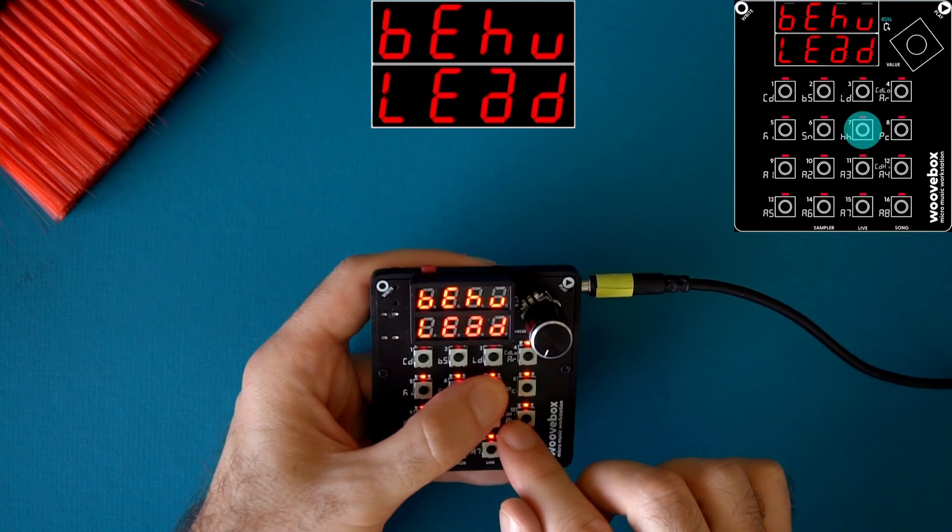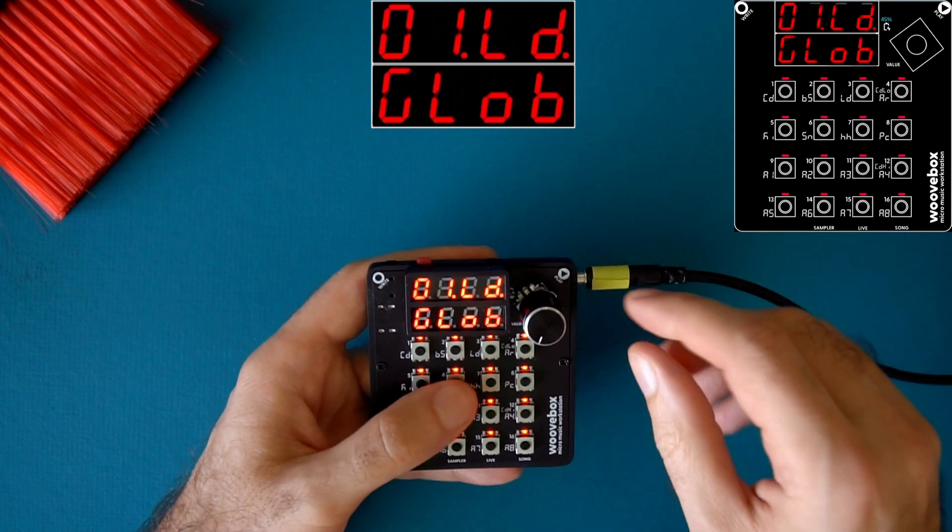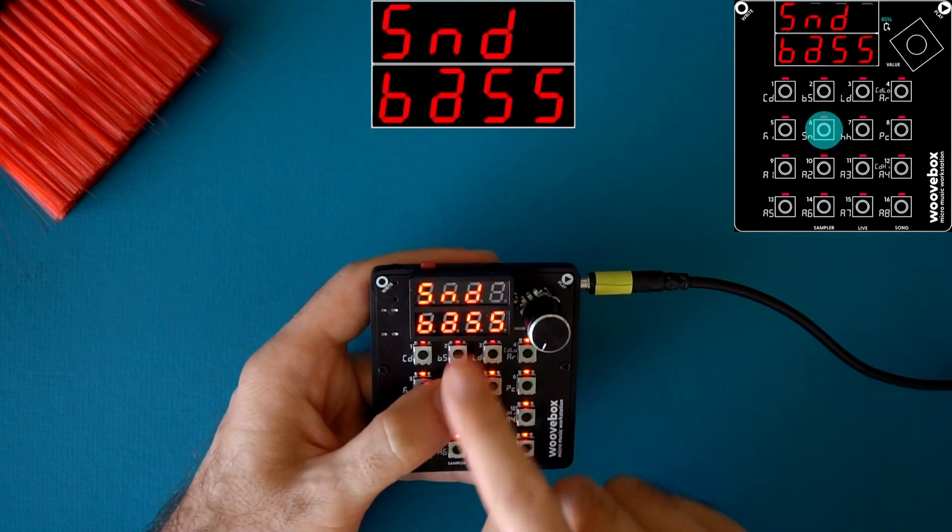And key 7 is the track behavior. Right now it's set to lead. And we set the sound category to base.